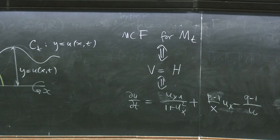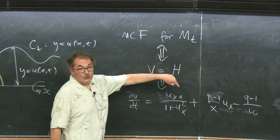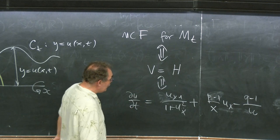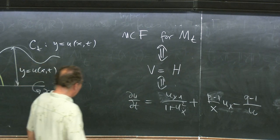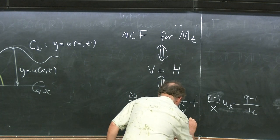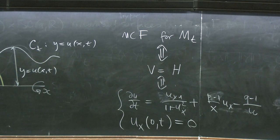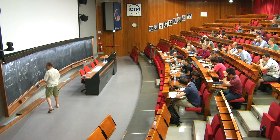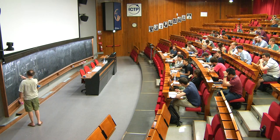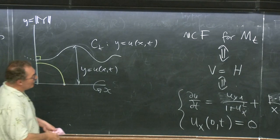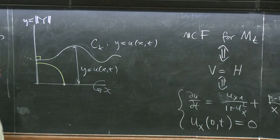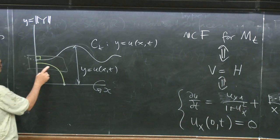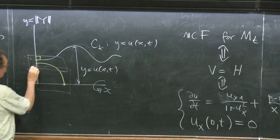If P equals 1, you have the real line cross Rq giving Rq+1, an ordinary rotationally symmetric surface, and setting P equal to 1 this term disappears and you recover yesterday's equation. Boundary conditions require the graph to hit the axis perpendicularly. You can evolve a sphere by mean curvature flow. When the curve goes through the axis, you should regard part of the solution as Y a function of X and the other part as X a function of Y.